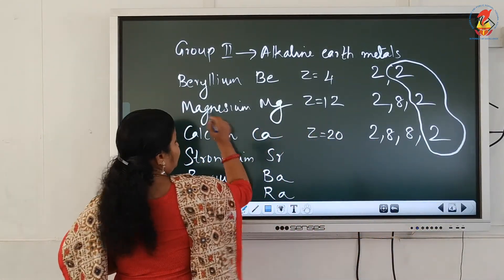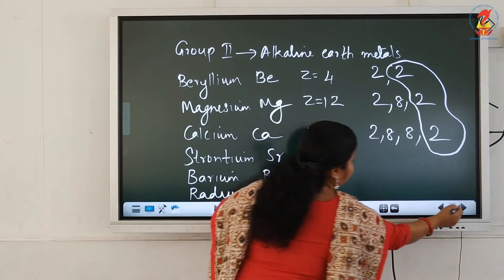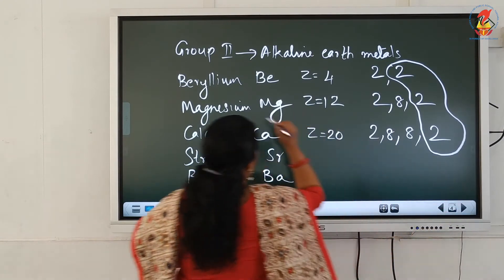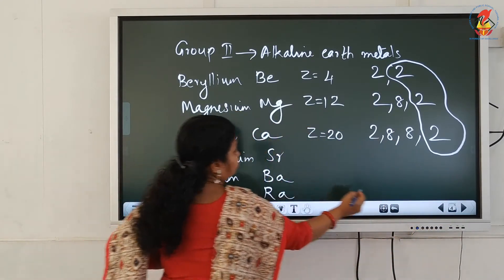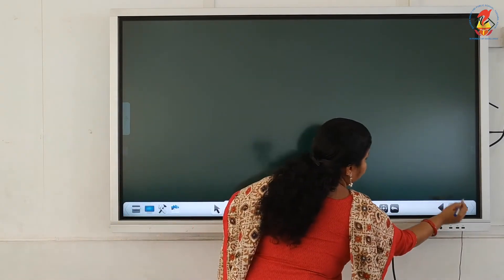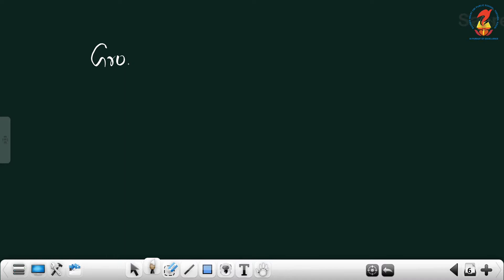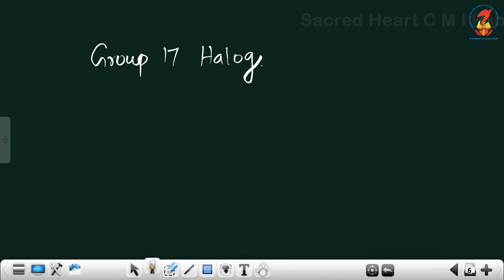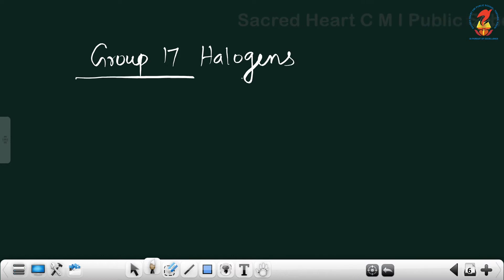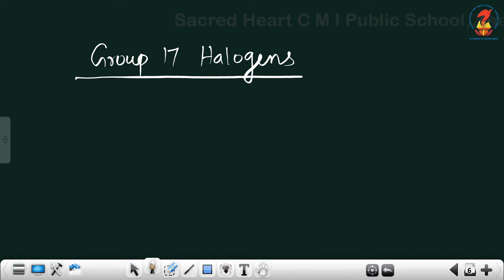The next group to learn is group 17, known as halogens. Group 17 elements of the modern periodic table are known as halogens.